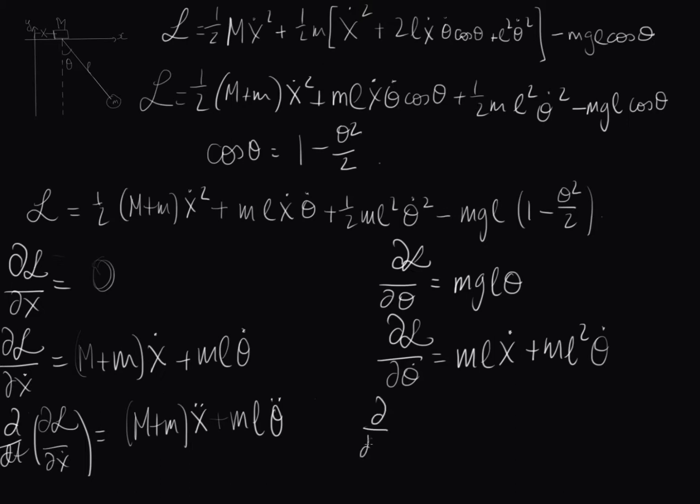And now again, find the time derivative of that, we end up with M L x double dot plus M L squared theta double dot. So these are the two parts we'll be using for our two Euler-Lagrange equations, DL dx, and then D dt of DL dx dot, and same thing of theta. So I'm just going to clear up this bit, and put this up the top, and then we'll solve the Euler-Lagrange equation.